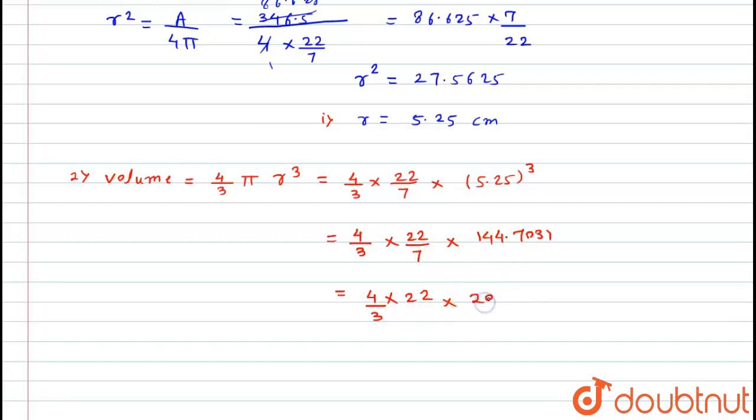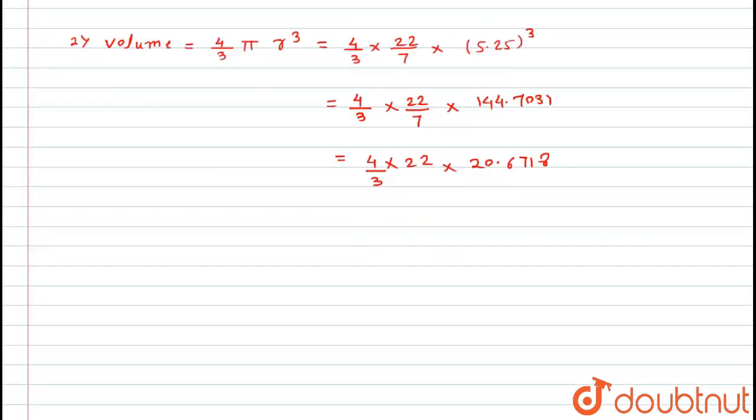Now further dividing by 3 and multiplying this 22 by 4, so it will become 88 into and this term I will divide by 3. So here I get 6.89 something. Now after multiplying this, I will get here 606.375 centimeter cube.